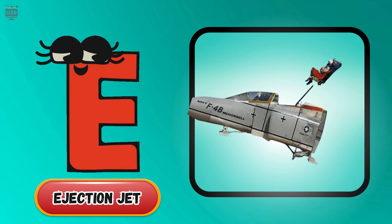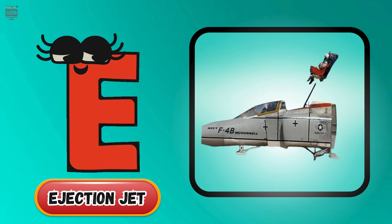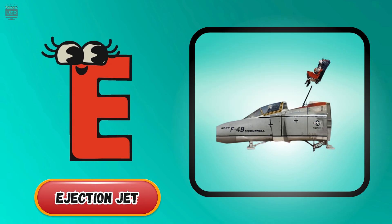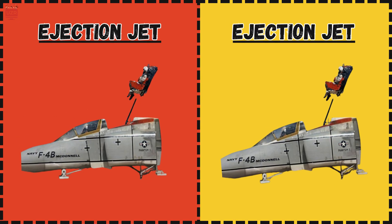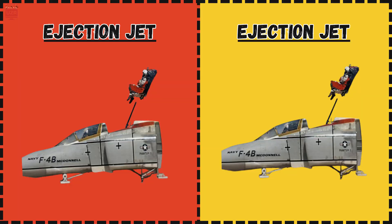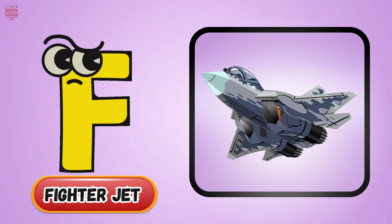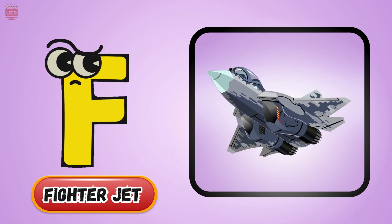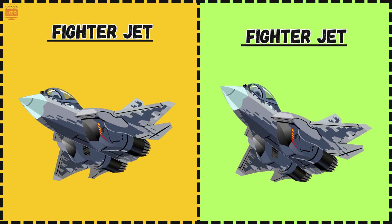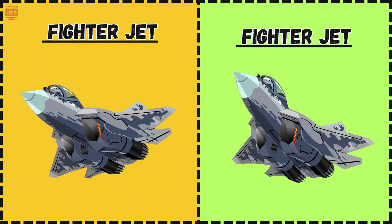E is for ejection jet, pilots fly with super speed. F is for fighter jet, zooming by like lightning speed.